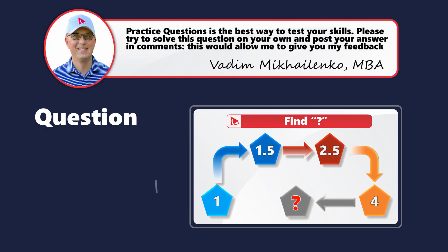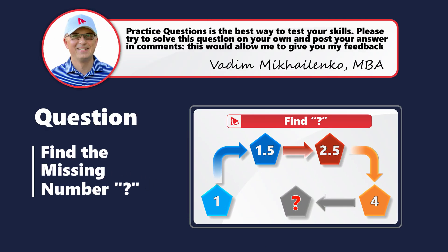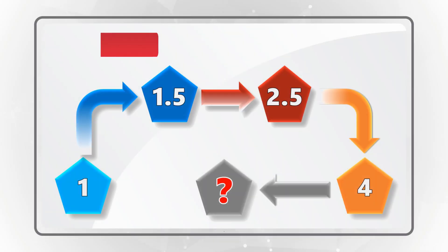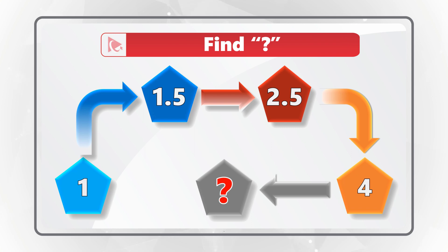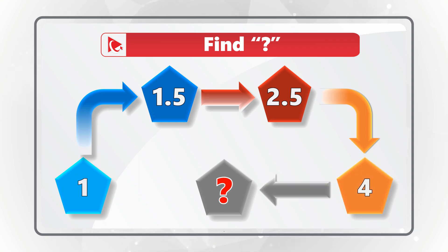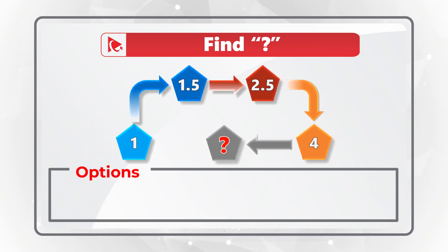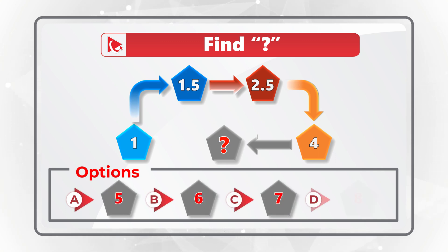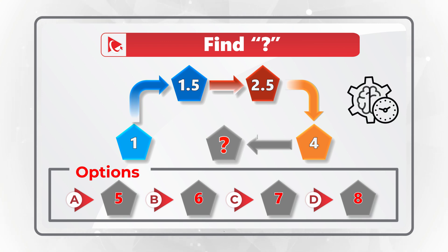Here's a practice question — I'm not going to share the answer. You need to solve it on your own and post your answer in the comments so I can give you feedback. You're presented with an unusual shape sequence and need to find the missing item. Choices are: A = 5, B = 6, C = 7, D = 8. Consider whether the different colors of the shapes play a role in the sequence.